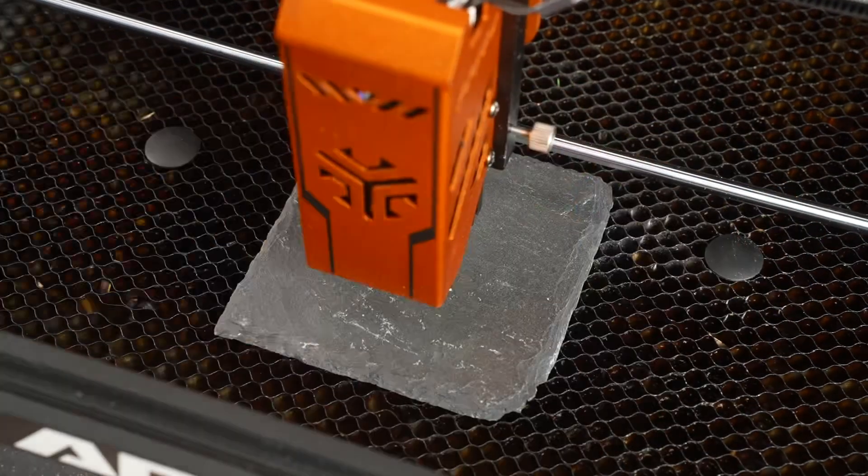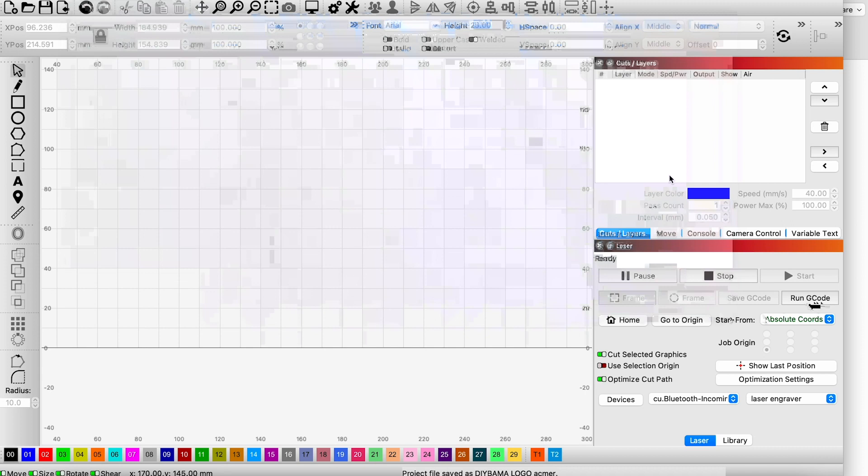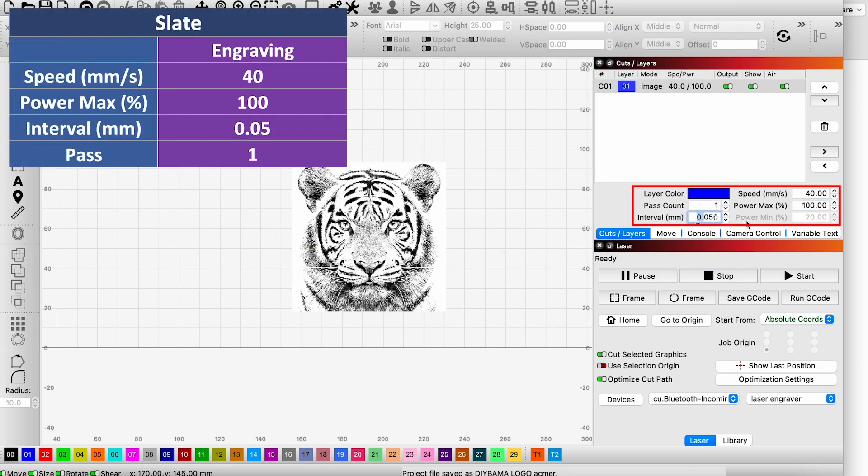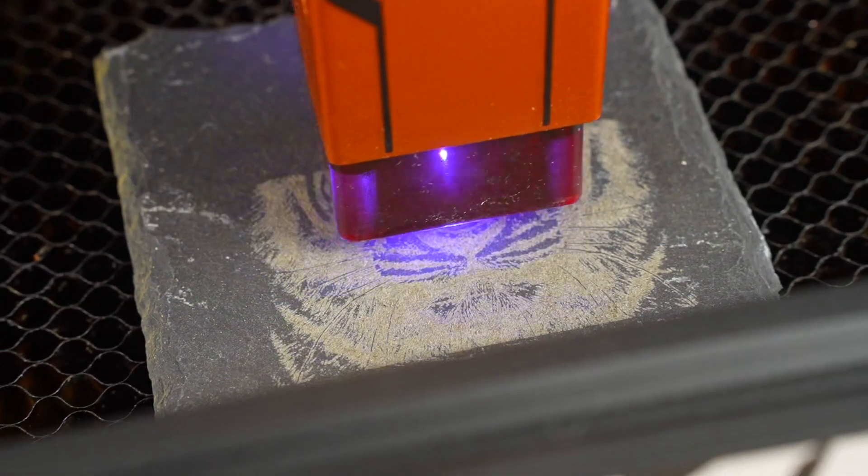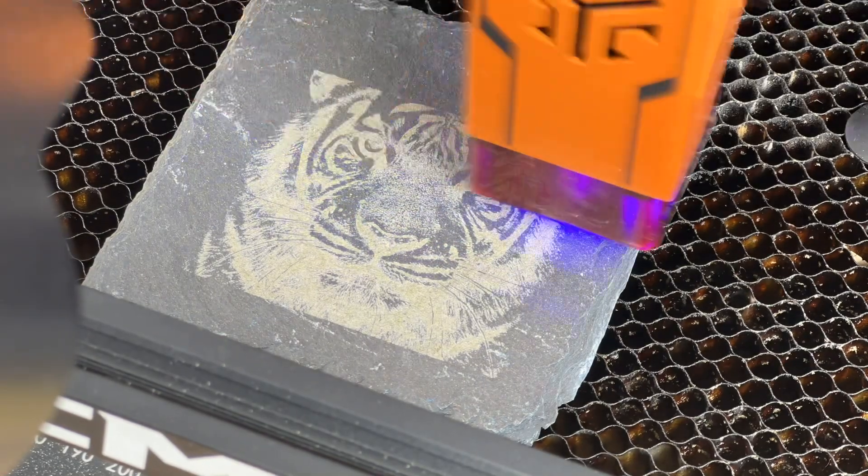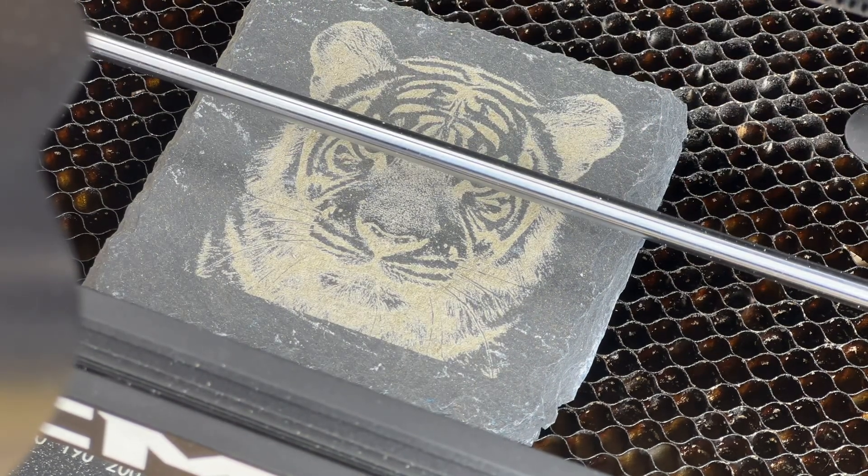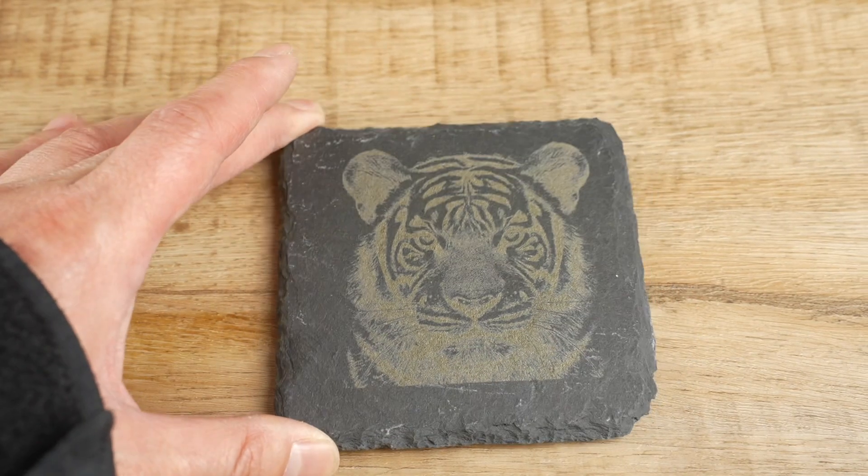Now, let's experiment with engraving an image on slate. I adjusted the speed to 40mm per second and set the power to 100% with an interval of 0.05mm. I always find it gratifying to observe the engraving process unfold. However, while the result is intriguing, the image isn't as clear as I had anticipated.